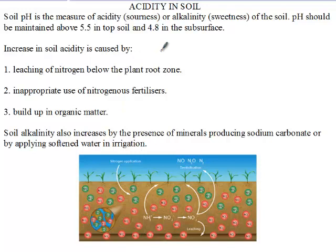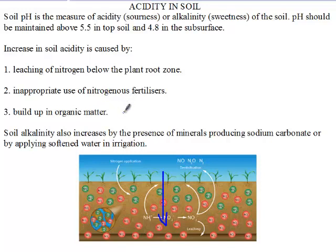There are certain things that can alter these pHs — things that can increase acidity or increase alkalinity in the soil. For example, leaching of nitrogen below the plant root zone can raise the acidity of a soil. If you apply nitrogen to the soil and it moves deep down to a point where the plant roots cannot tap it, with time they are going to form acids and acidify the soil. Also, when we use nitrogen fertilizer in excess, there are going to be excess nitrogenous compounds in the soil that will also increase acidity.